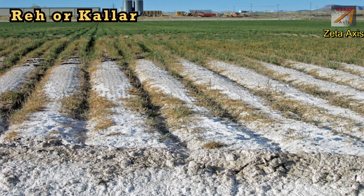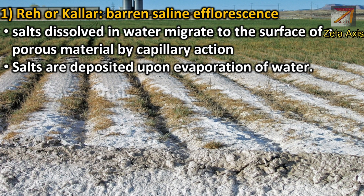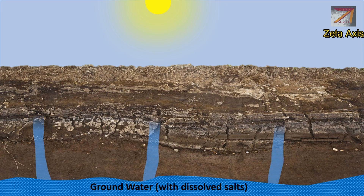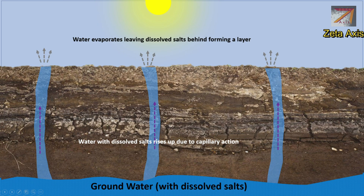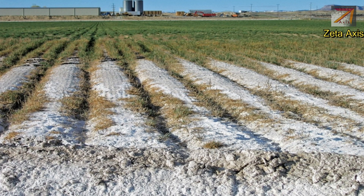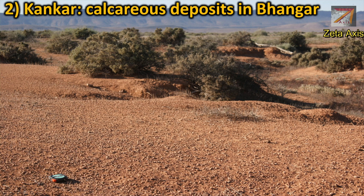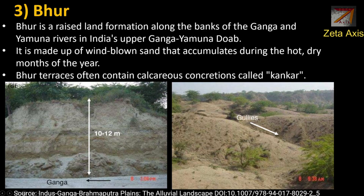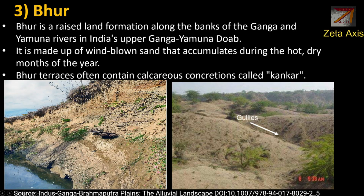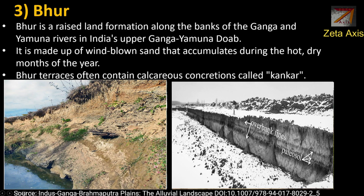Some important features of the Upper Ganga Plains: First is Reh — bare and saline efflorescences seen as a white layer on soil. These form in arid regions where water evaporates from the surface and water from lower soil rises due to capillary action, bringing dissolved salts. When that water evaporates, it leaves behind salts forming a white layer called Reh. Second is Kankar nodules — calcareous deposits found in the Bhangar region of the Upper Ganga Plains, formed by weathering of rocks. Third is Bhur deposits — raised land formations along the banks of the Ganga and Yamuna rivers, made of wind-blown sand accumulated during hot dry months. Bhur terraces often contain calcareous concentrations called Kankar.